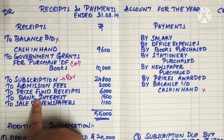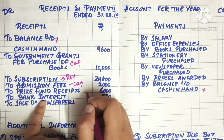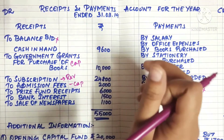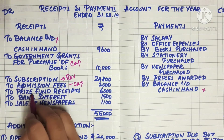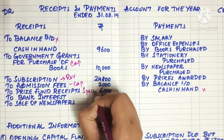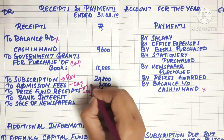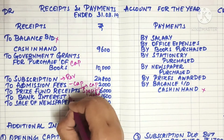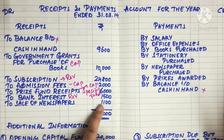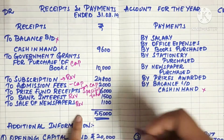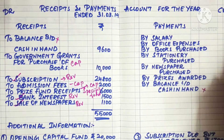Then we have a capital item. Now we have a price fund — this is a specific fund and goes to the balance sheet. Bank interest and sale of newspapers are also identified. Subscription, bank interest, and sale of newspapers go to the income and expenditure account on the income side.